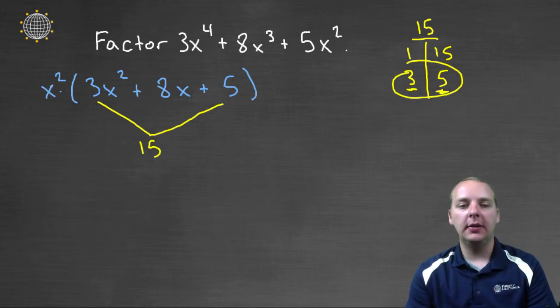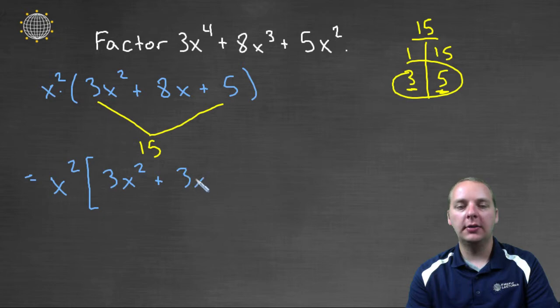And so let me rewrite this polynomial here, don't forget your x squared. So we'll have x squared, and then we'll have, and I'm actually going to put brackets here, 3x squared, plus 3x, plus 5x, plus 5.